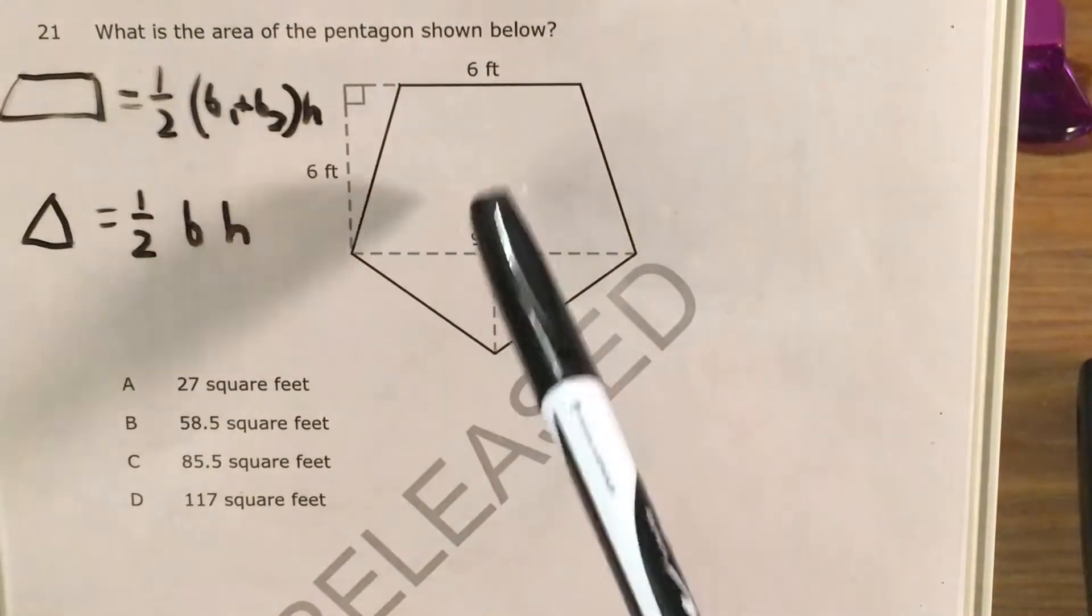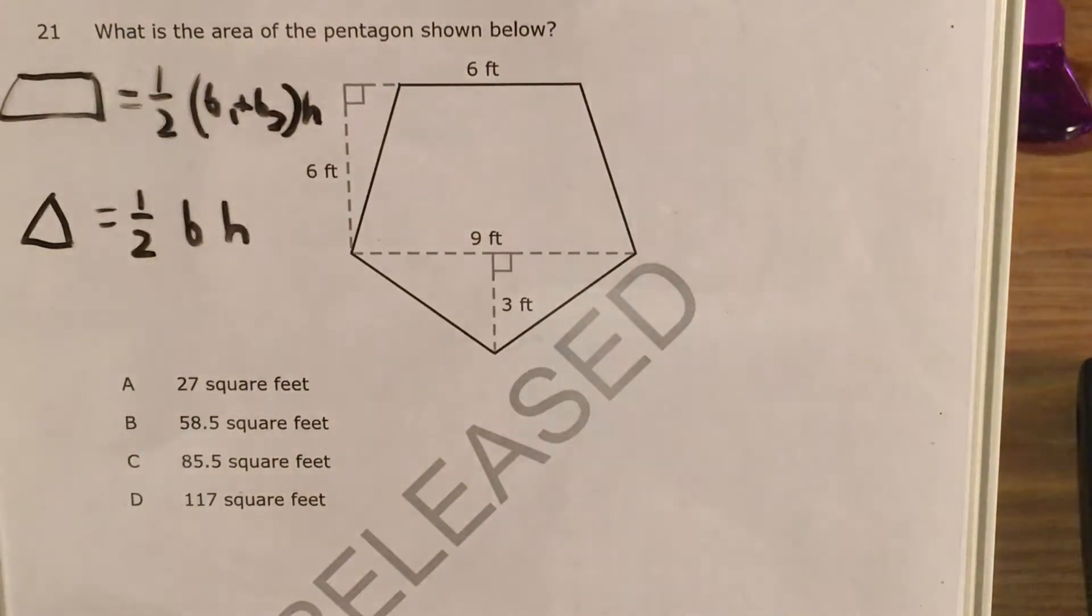As well as how to work with compound shapes where we have multiple different things that we know how to find the smaller areas of, and we'll eventually just have to add up those areas to get the area of the entire pentagon.